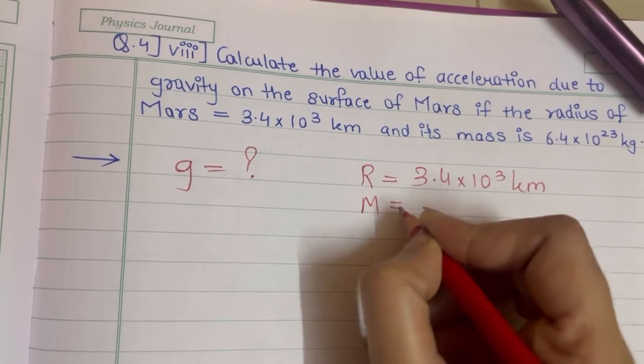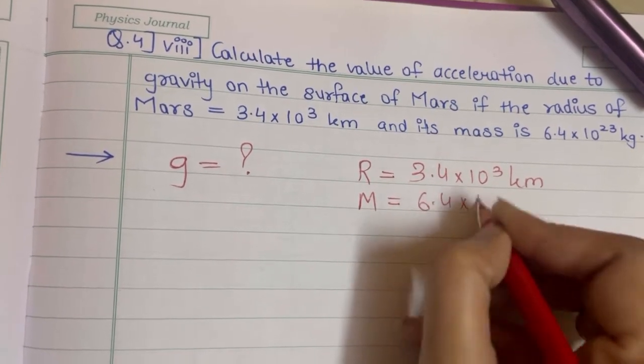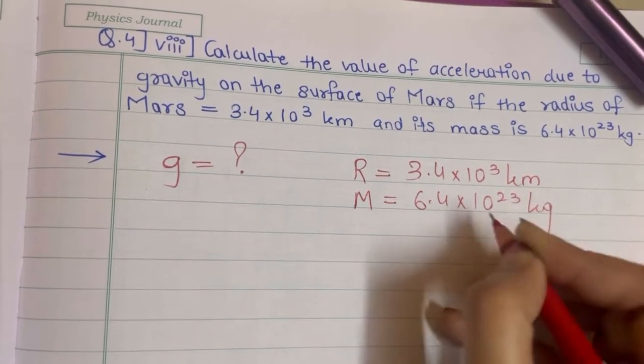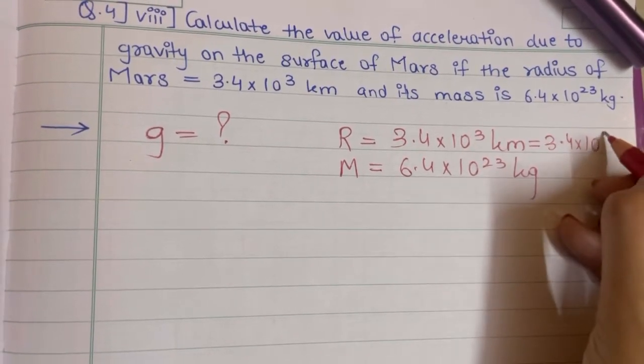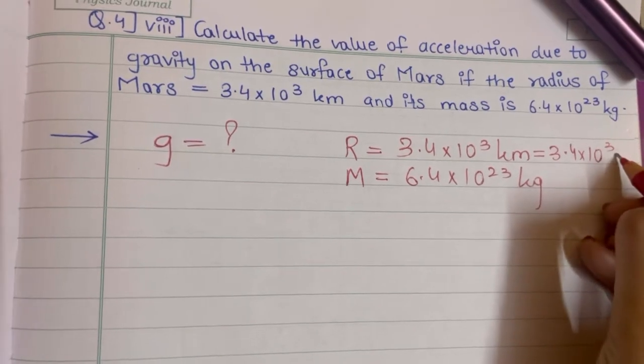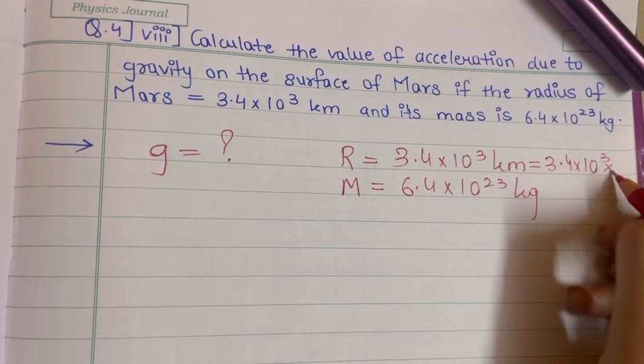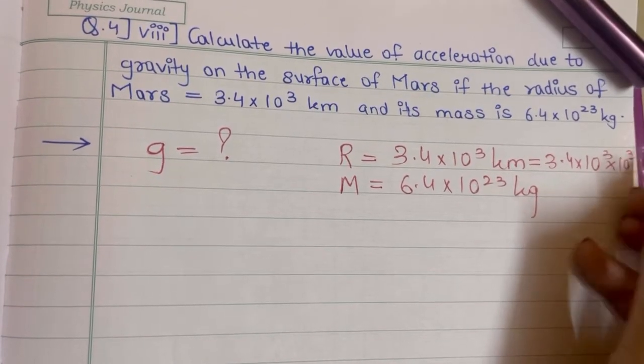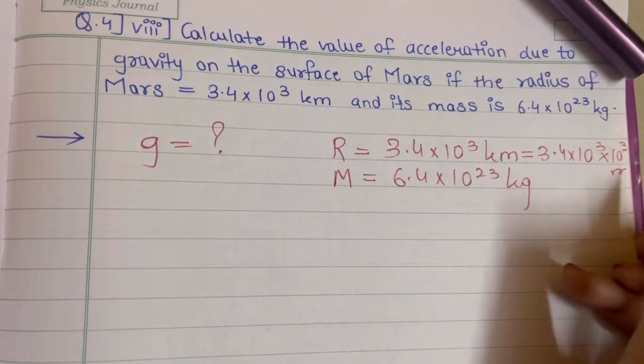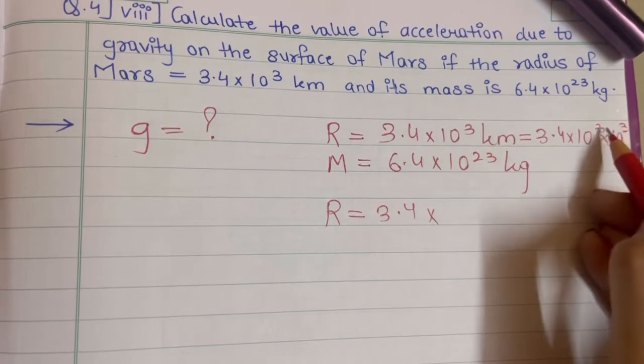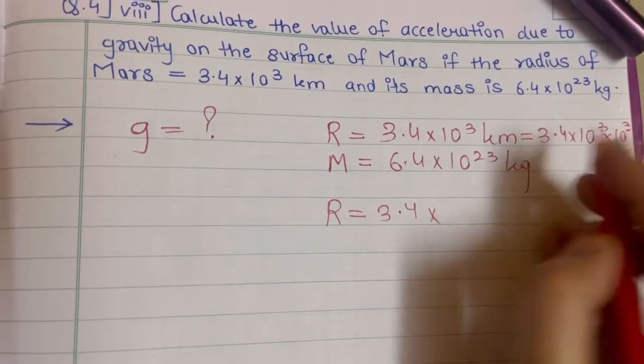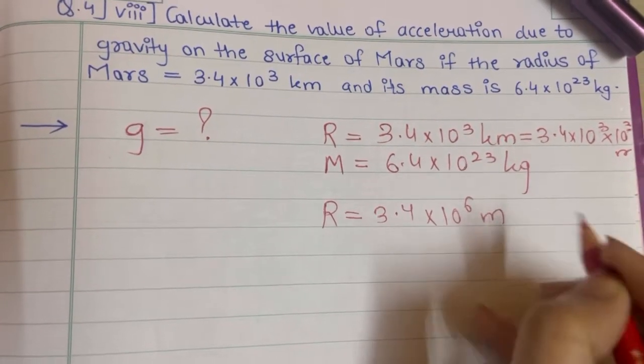The mass of Mars is 6.4 × 10²³ kg. We need to convert the radius to meters: 3.4 × 10³ km equals 3.4 × 10³ × 10³, which gives us 10⁶. So R = 3.4 × 10⁶ meters.